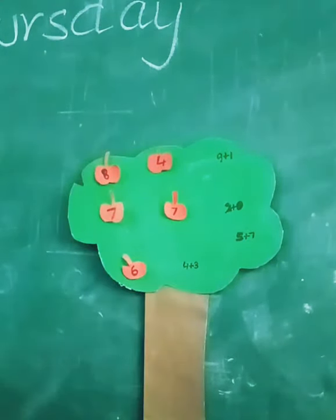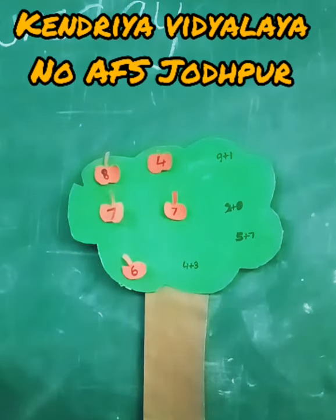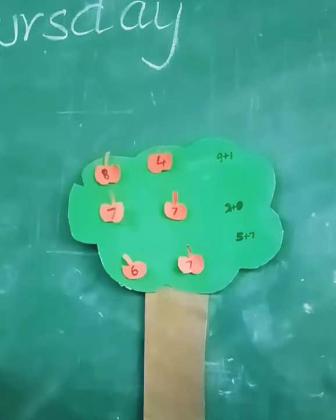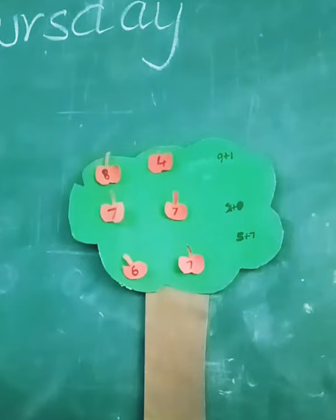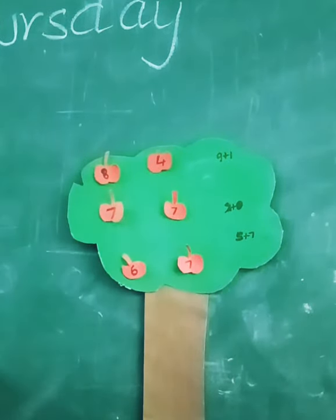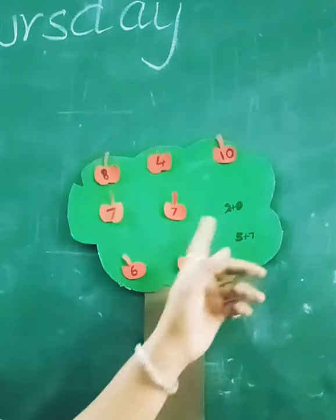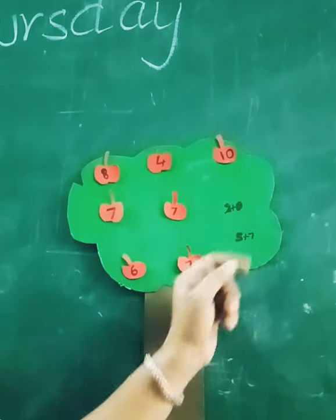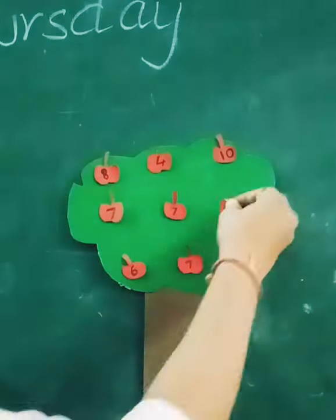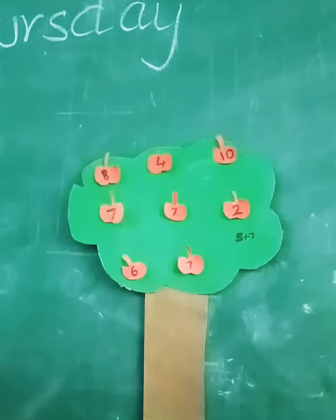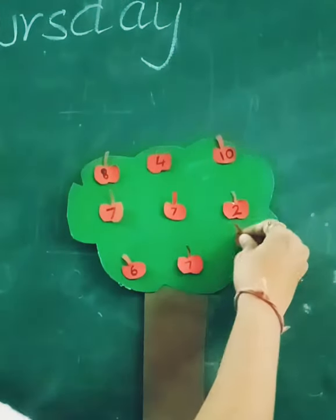This one 4 plus 3. 4 plus 3 is 7. Now, 9 plus 1. 9 plus 1 is 10. 2 plus 7 is 9.